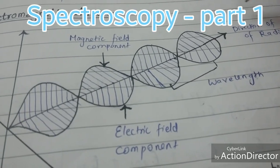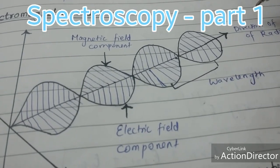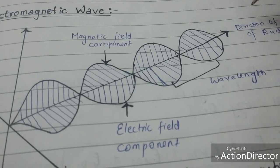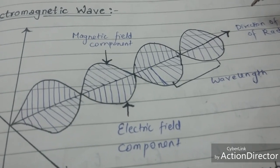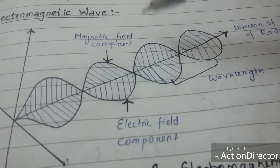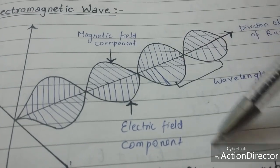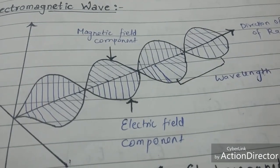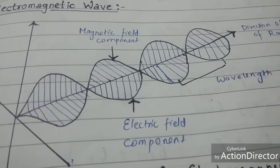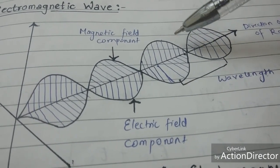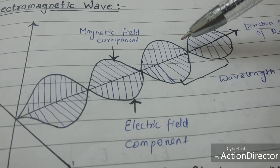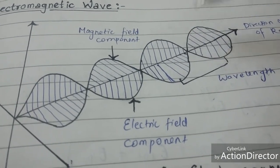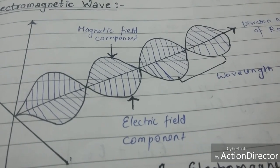Today I will start with the topic spectroscopy. When we talk about spectroscopy we should know what electromagnetic waves are. Electromagnetic waves have a magnetic field component and an electric field component which are mutually perpendicular to each other and to the direction of propagation of the wave. When such electromagnetic waves are arranged according to increasing wavelength or decreasing frequency, that is known as the electromagnetic spectrum.